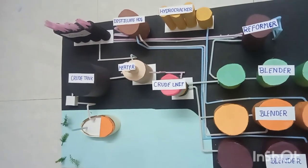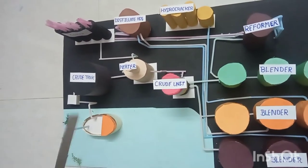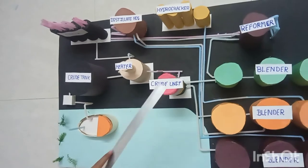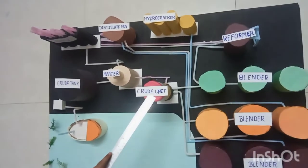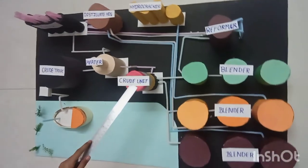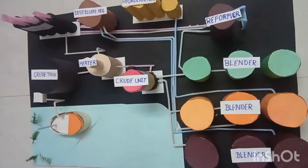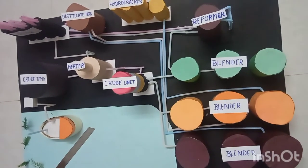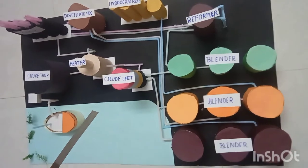The next one is crude unit. Separation of oils occurs here depending on their weight. First, we have gasoline, naphta, kerosene, diesel, heavy oil.